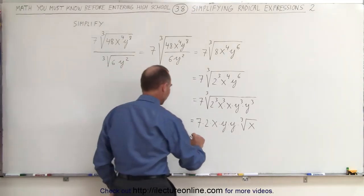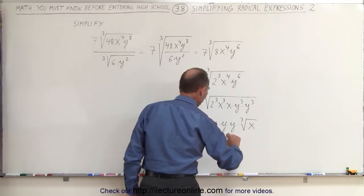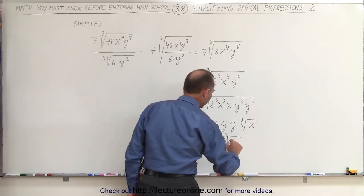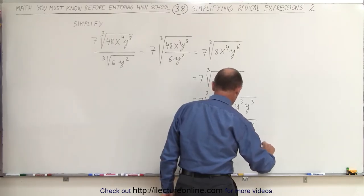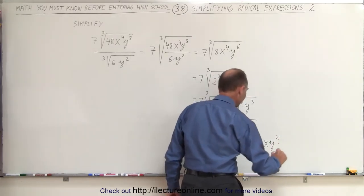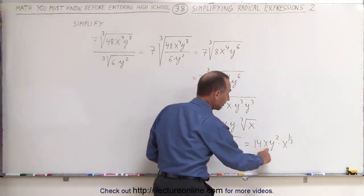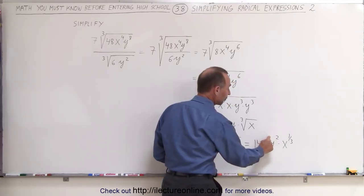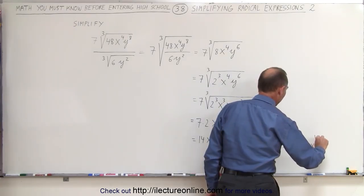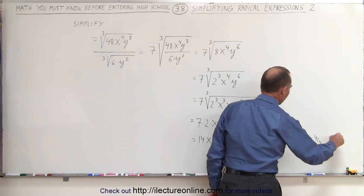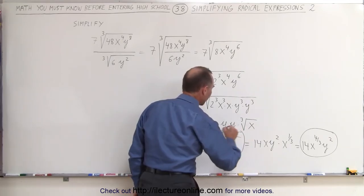And of course, we combine these and we get 14xy² times the cube root of x. And if you don't like the radical symbol, you can write that last part as 14xy² times x to the 1/3 power. And then if you like, you can combine these together: 14x to the 4/3 power y². So you can write it as a final answer like this, or you can leave it in radical form.